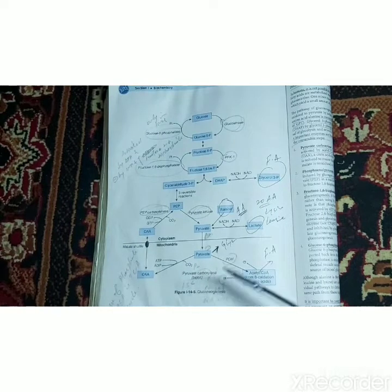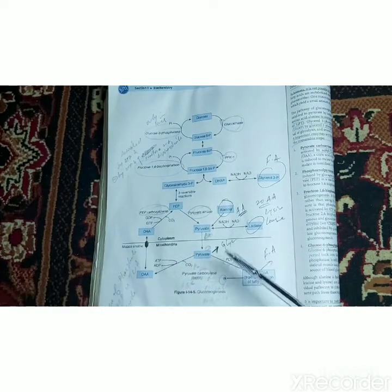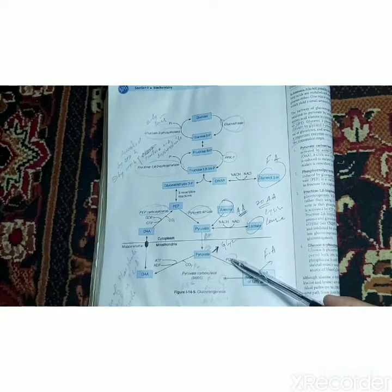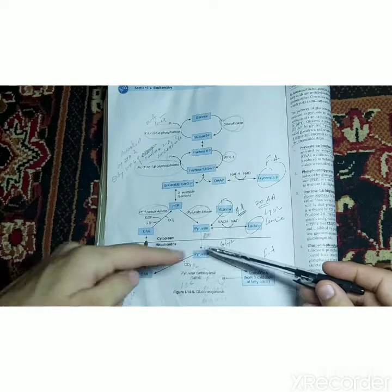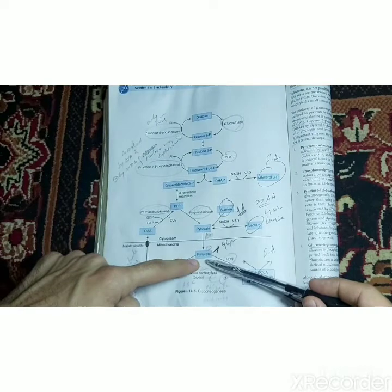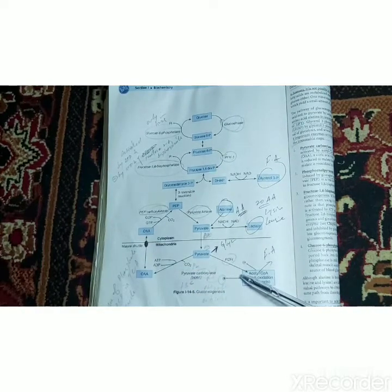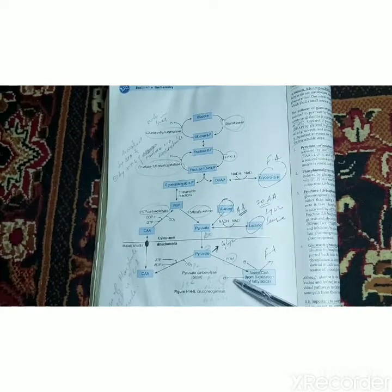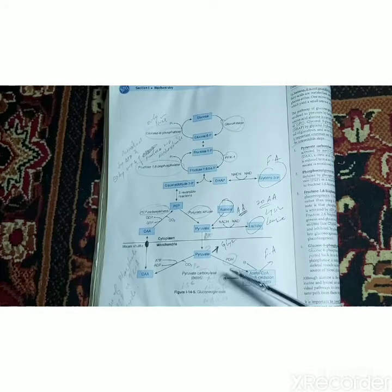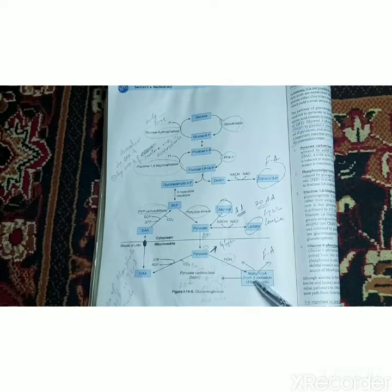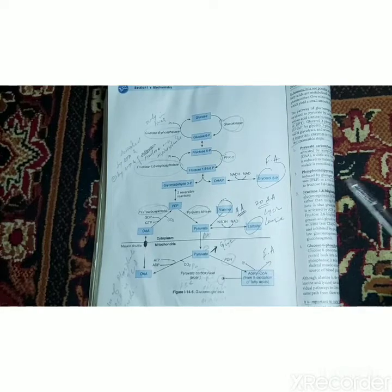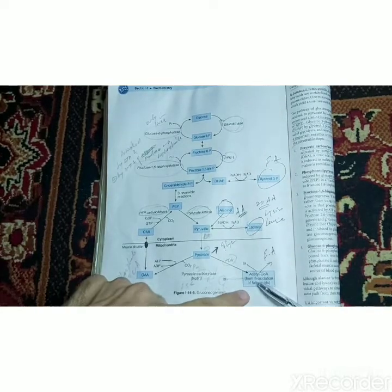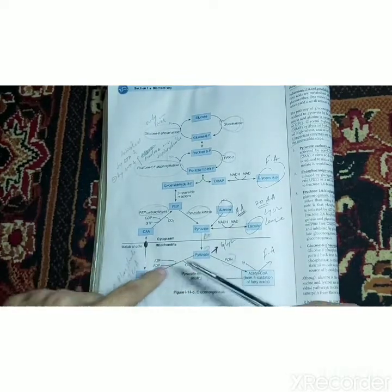The first step was conversion of pyruvate into oxaloacetate. Acetyl-CoA not only activates pyruvate carboxylase, but it also inhibits PDH (pyruvate dehydrogenase). PDH normally converts pyruvate into acetyl-CoA when we have excess glucose. When we have a deficiency of glucose, fatty acids break down into acetyl-CoA, which then activates pyruvate carboxylase and inhibits PDH, ensuring pyruvate is directed into gluconeogenesis.